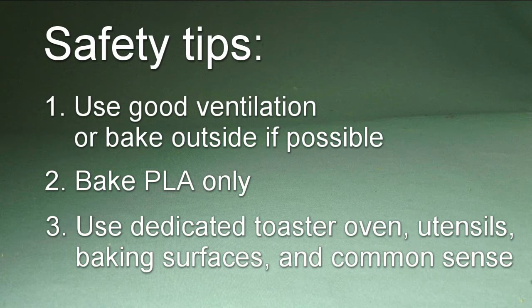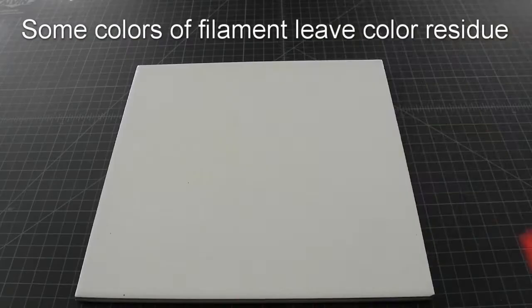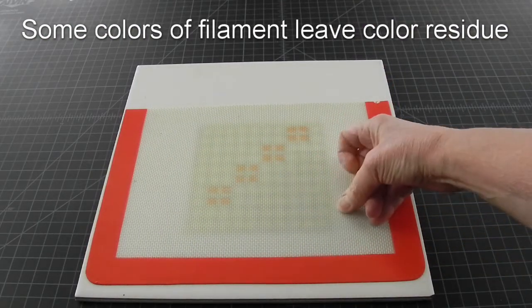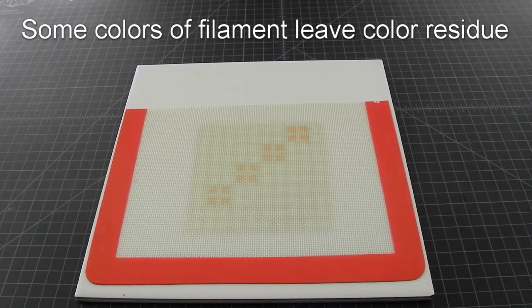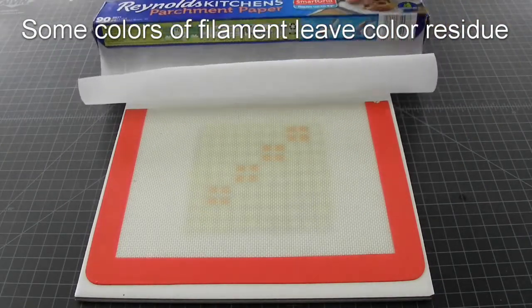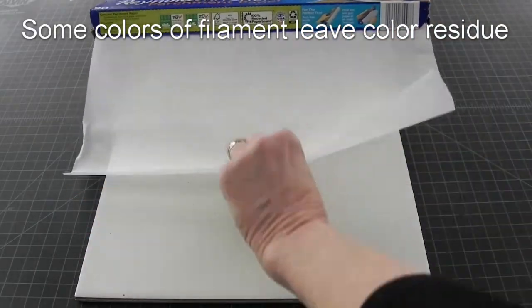Speaking of dedicated equipment, some colors of filament will stain your silicone baking mats, usually the intense reds, blues and yellows. So for those you may choose to bake on parchment paper to keep your mats clean.